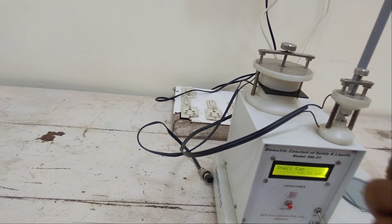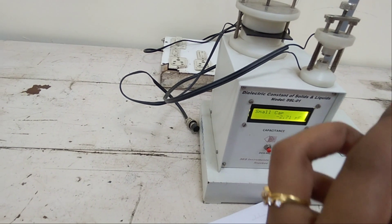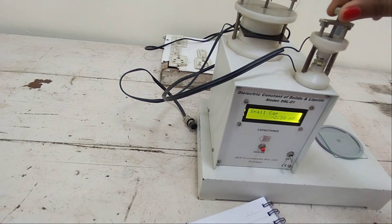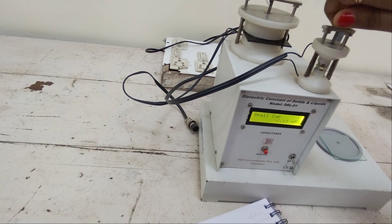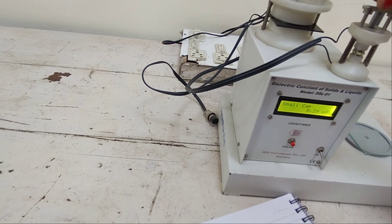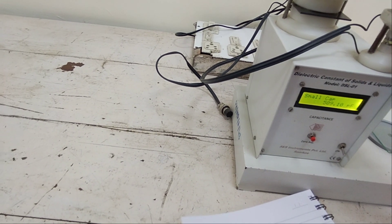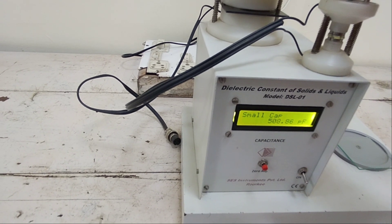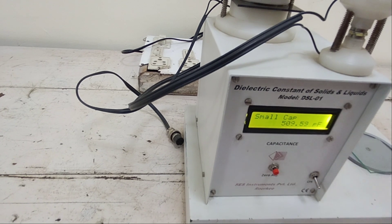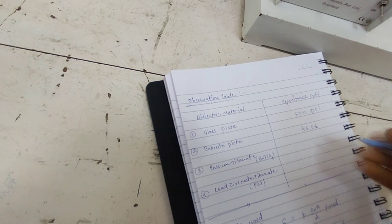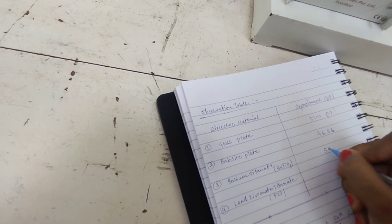This is your barium titanate sample which we insert here. You can see like that and tighten the knob. Don't get it too much tight, only when the surface is touched through the sample. You can see the reading is 409.5. Now we can note down for which material barium titanate. How much? 409.55.